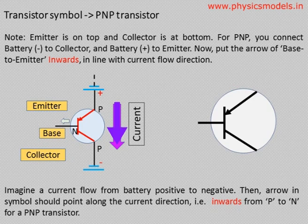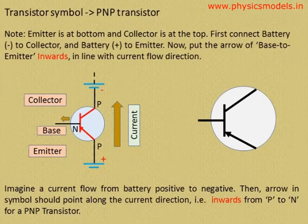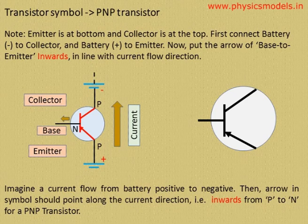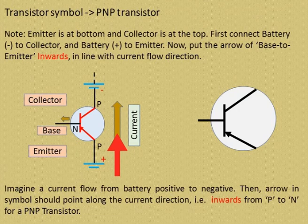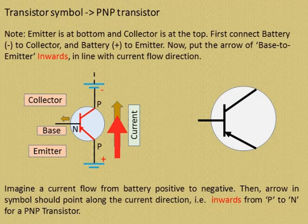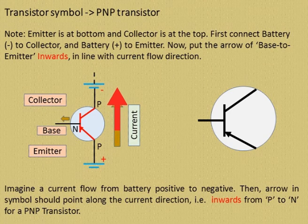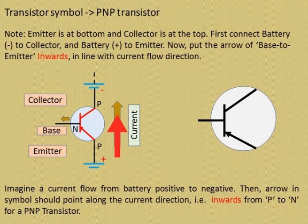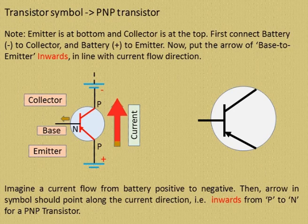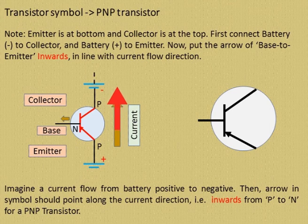The basic thing in a PNP transistor is to just establish the correct connection for the emitter. Here is another circuit showing a different position of emitter and collector, and this should not cause any confusion. We first look at which side is the emitter — the side where the PNP transistor's P semiconductor is connected to the positive side of a battery must be the emitter. Automatically the other end becomes the collector and we connect that P to the negative terminal of a battery. The current flow is established from positive to negative, and therefore the arrow inside the transistor symbol is from P to N pointing inwards, in the direction of current flow. Thanks and have a great day.